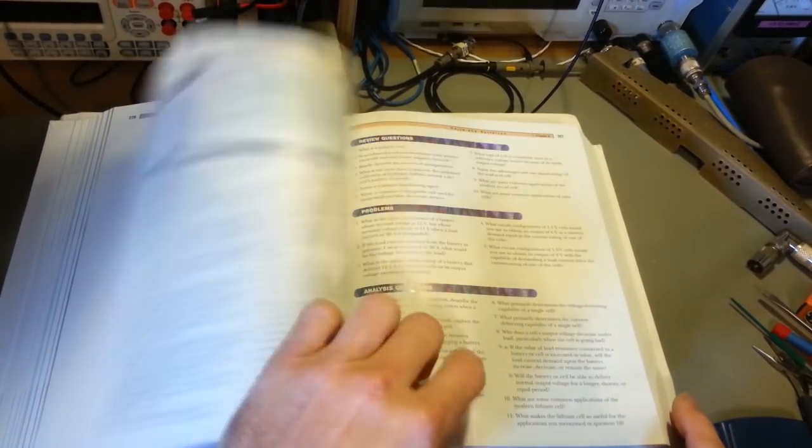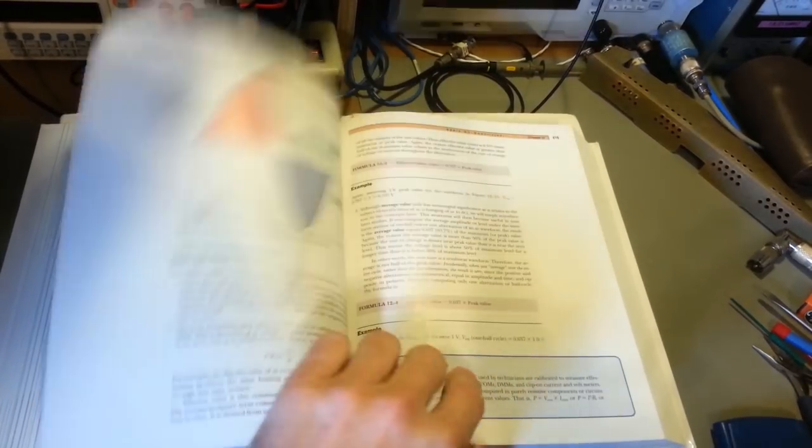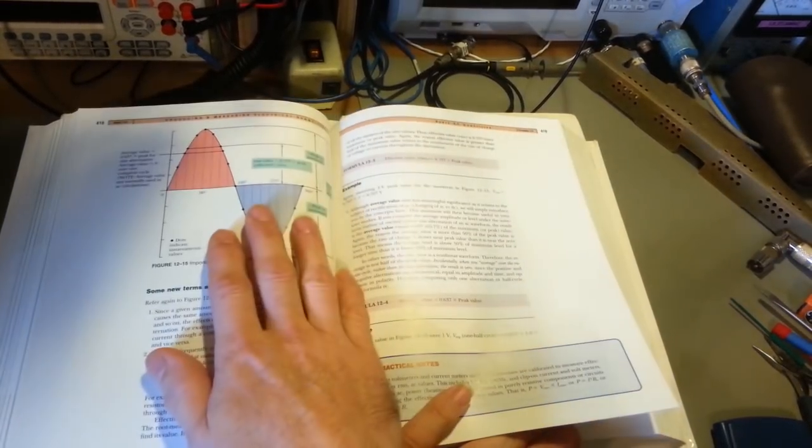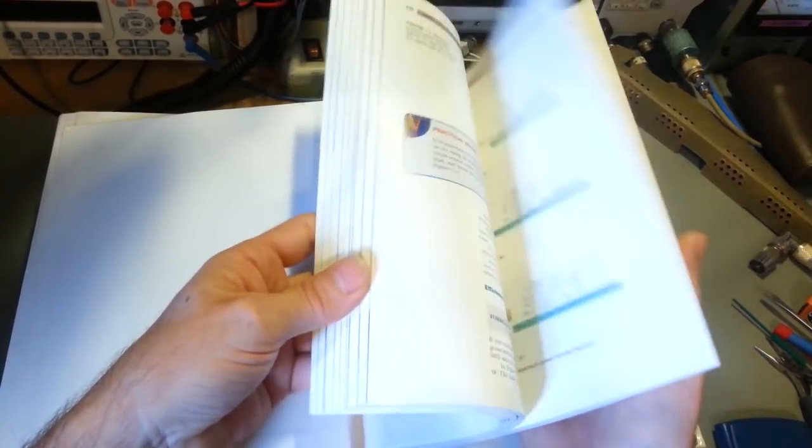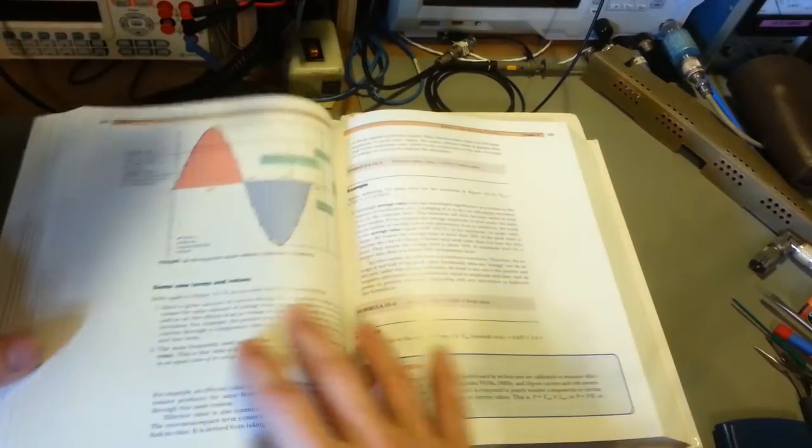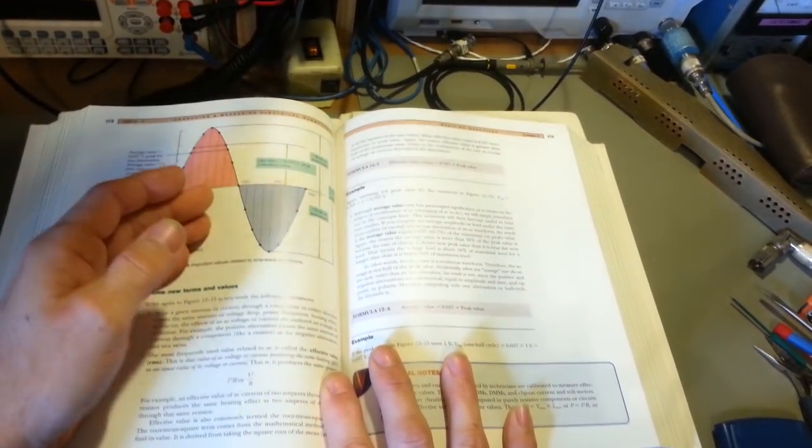It takes you up through series parallel circuits, DC and AC circuits, different types of components. Eventually you get into capacitors, inductors, reactive circuits. AC, you start to get a lot of math. Don't get me wrong, there's a lot of math in the DC portion, but once you get into AC you're going to start getting into trigonometry, geometry.